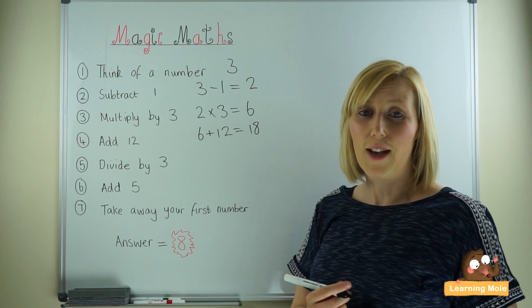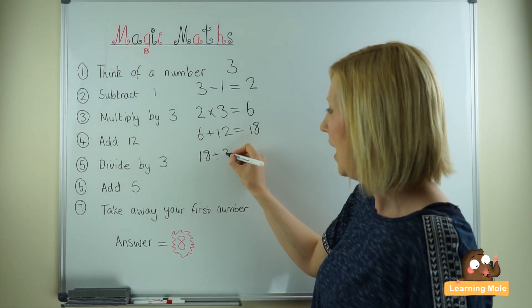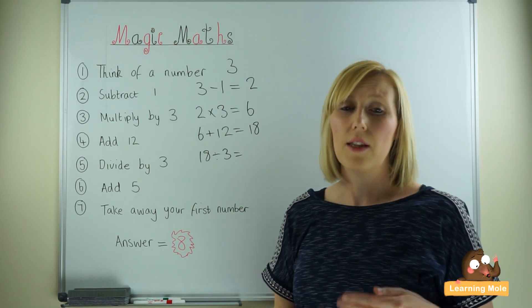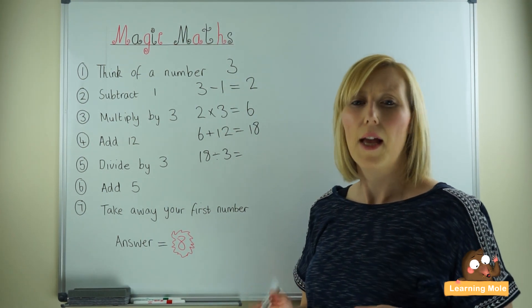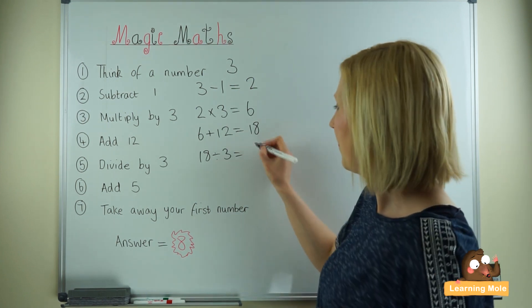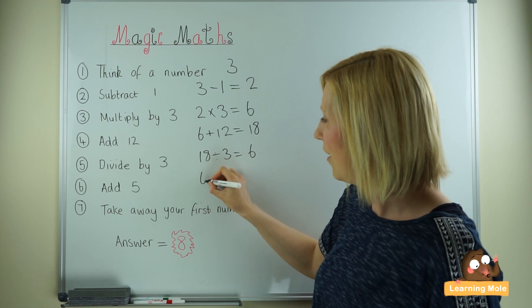Then we're going to divide by 3. So 18 divided by 3, again a great way of using those inverse multiplication facts and those really good mental strategies. So we're back to 6. Now we're going to add on 5.